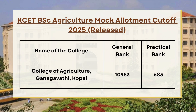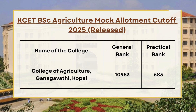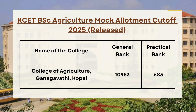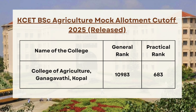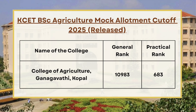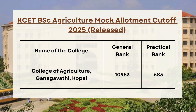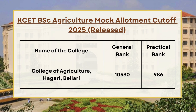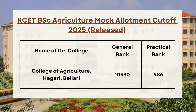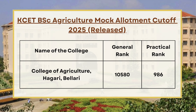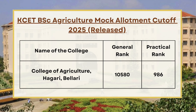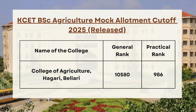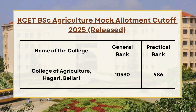Moving ahead, we have College of Agriculture Gangavati, so for general category the cutoff is 10983 and for practical rank the cutoff is 683. Next, for College of Agriculture Beladi, for general category the cutoff is 10580 and for practical the cutoff is 986.